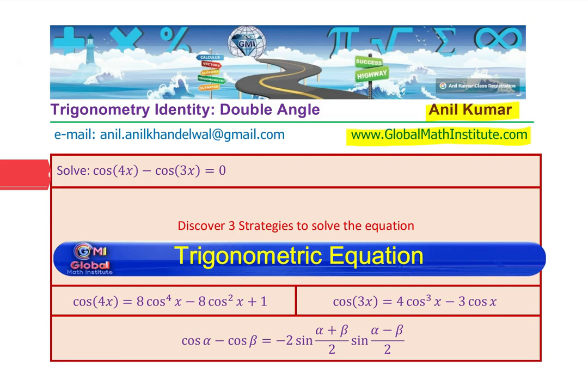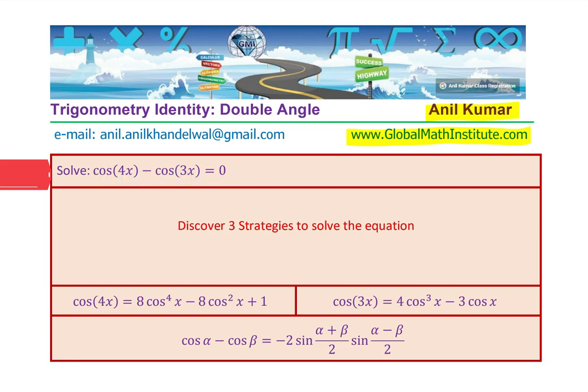We need to solve the equation cos 4x minus cos 3x equals to 0. That is the given equation for you. Find general solution for cos 4x minus cos 3x equals to 0.